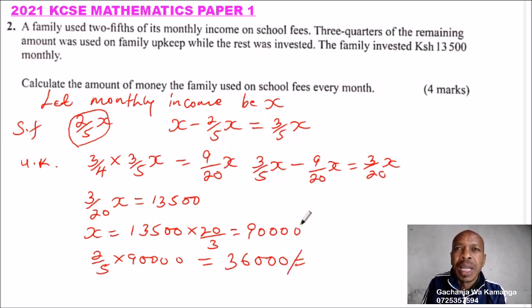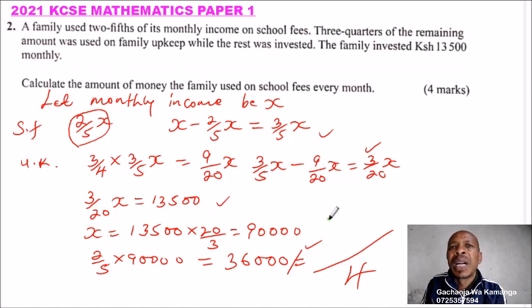By doing that, you will be able to get one mark for getting the remainder, another mark there, another mark for equating that, and another mark for the answer, totaling to four marks. So what is being tested here is whether you know how to work with fractions.